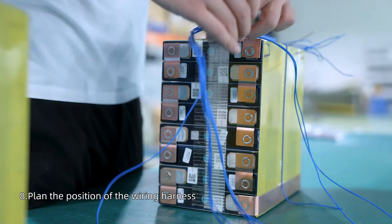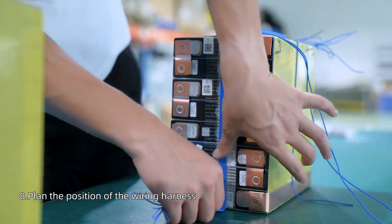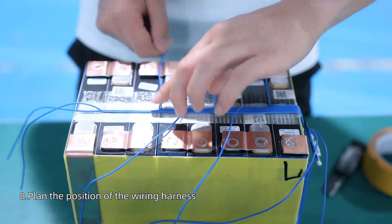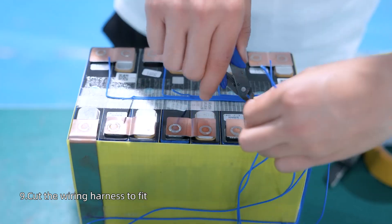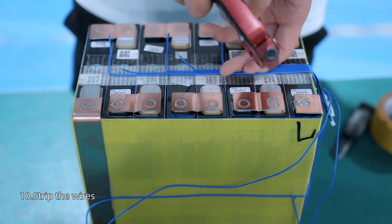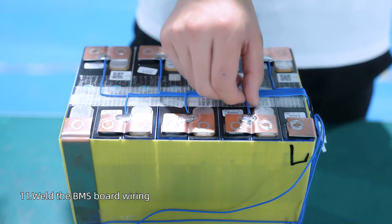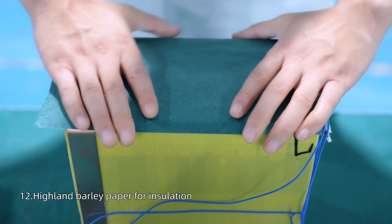Plan the position of wire harness. Cut the wiring harness to fit. Strip the wires. Wire the BMS board with high temp tape for insulation.